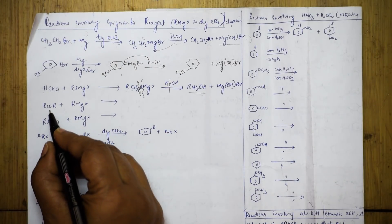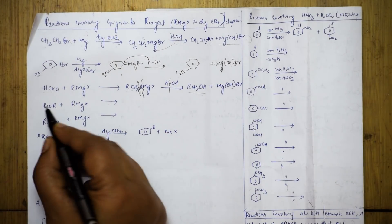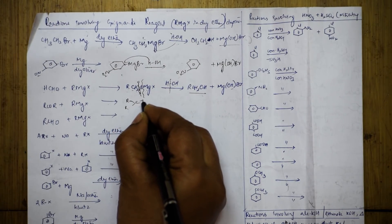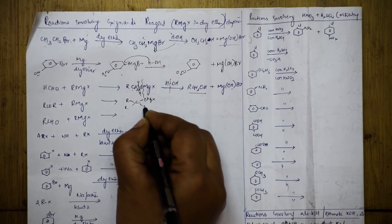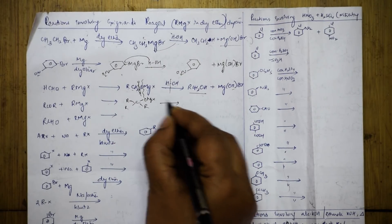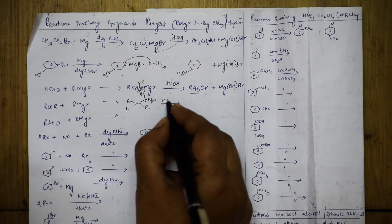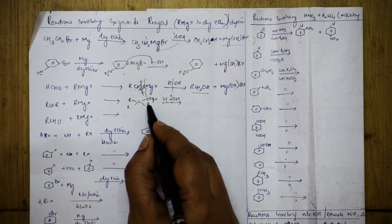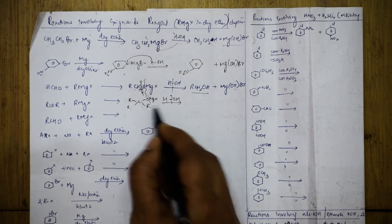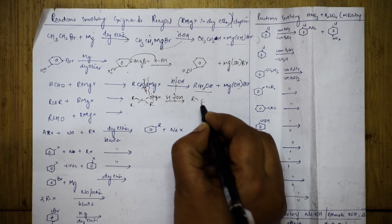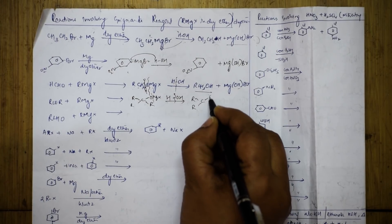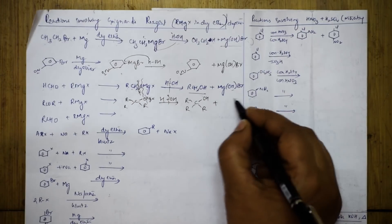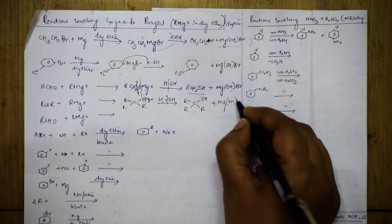With ketones, you have to add the complete thing. R is here, C is here, this is R. To this oxygen, your MgX will add and your R. Now I am going to hydrolyze this - the bond is going to break here. You get R-C-R with OH and H, plus MgOHX or MgOHBr.